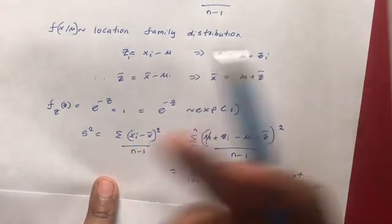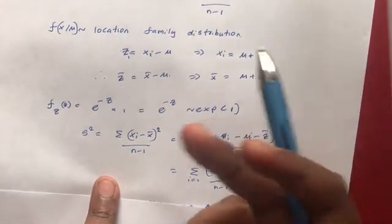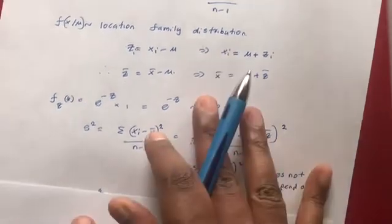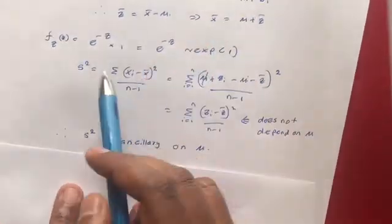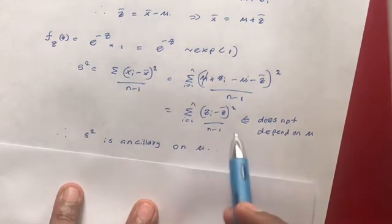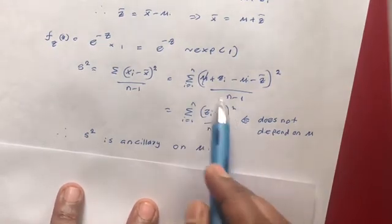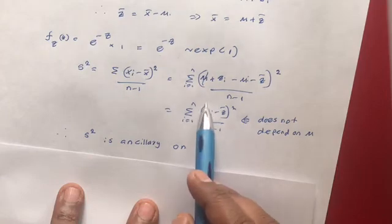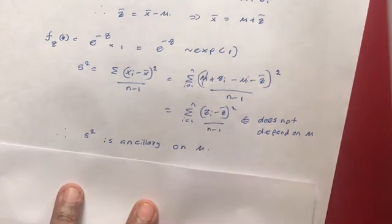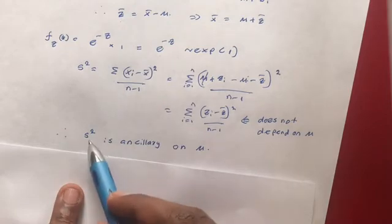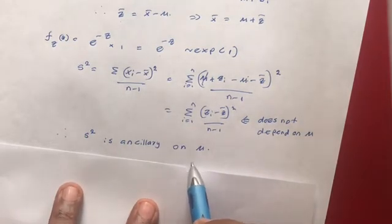Since Z_i and Z-bar do not depend on mu — because the distribution of Z_i is Exponential(1), which does not depend on mu — the distribution of Z-bar also does not depend on mu. Therefore, the distribution of this sample variance does not depend on mu, and we can say that the sample variance is ancillary on mu.